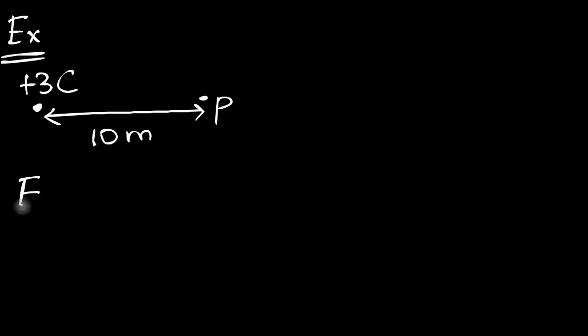Now notice at that point there's absolutely nothing. I have not kept a charge over there, it's empty space, but still there is an electric field. Why? How do I know there's an electric field? Because the moment I keep a coulomb over there, I'm going to place a coulomb.